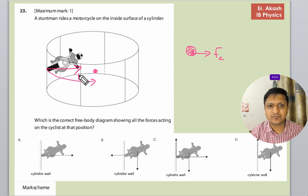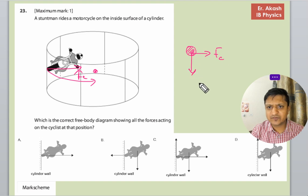One force will be this, and one force will be mg that will always be towards the ground. When this body is moving, there will be friction which will stop this body from going downwards. So there will be a frictional force over here.